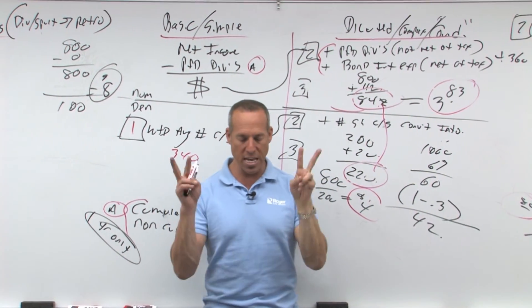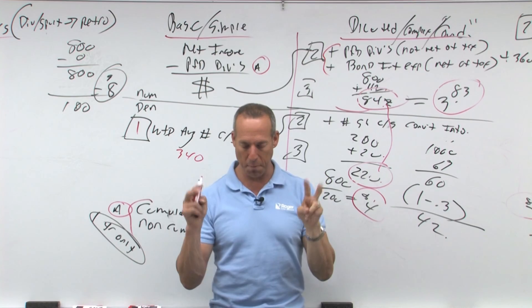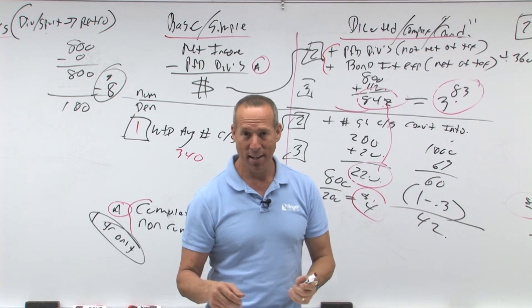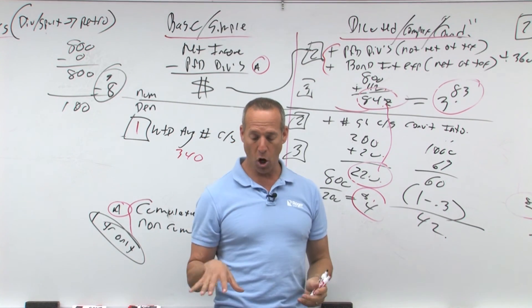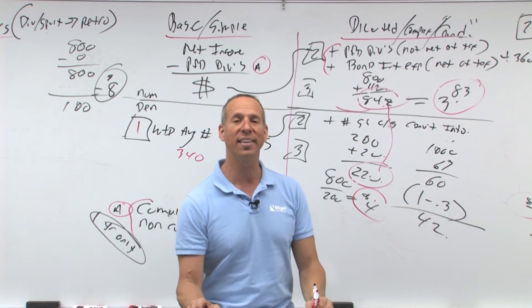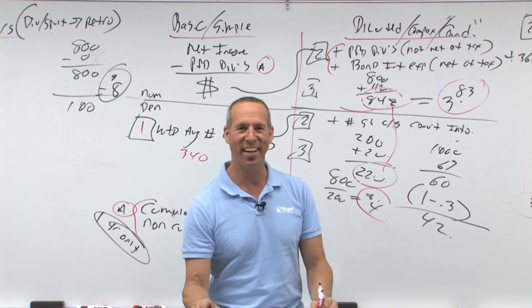That is called the if-converted method. The last thing with this is called the treasury stock method. We'll look at that in just a minute.